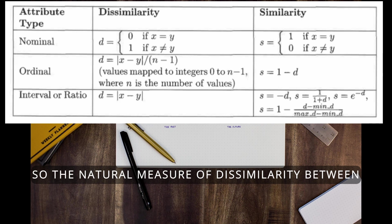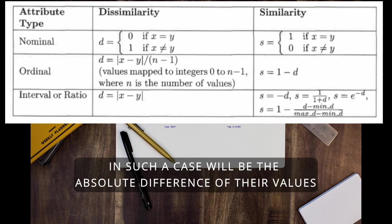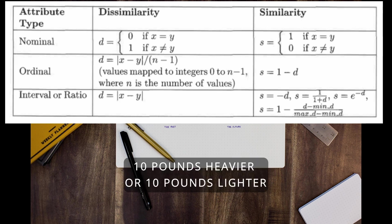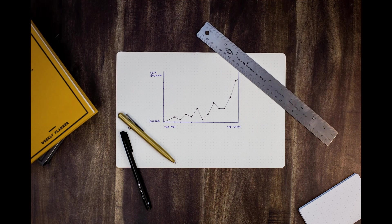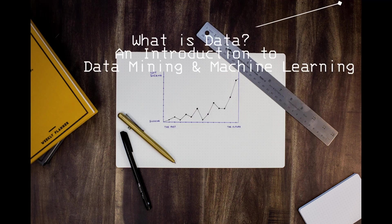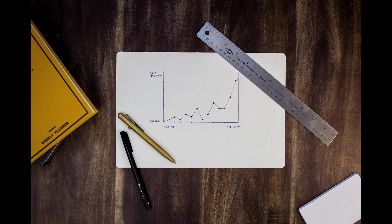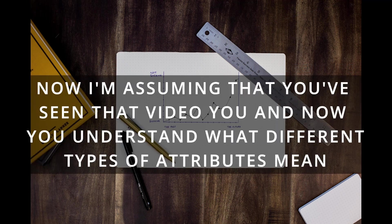For attributes of interval or ratio type, the natural measure of dissimilarity is the absolute difference of their values — for example, comparing weight, being 10 pounds heavier or lighter. If you are confused about nominal, ordinal, interval, and ratio attribute types, I previously posted a video on that which I'll link in the description. I highly recommend checking that out first — I'm assuming you've seen it and understand what different attribute types mean.